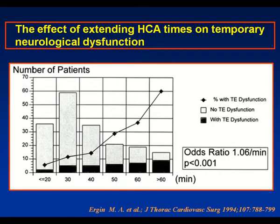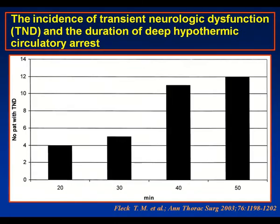Moreover, when we look at more subtle deficits of brain injury and cognitive performance, any inability to be tested early after surgery is a significant predictor of poor performance approximately a year after surgery. Hypothermic circulatory arrest of more than 25 minutes is a very significant predictor for late memory and fine motor loss, and also a determinant of prolonged hospital stay.